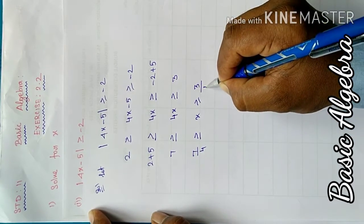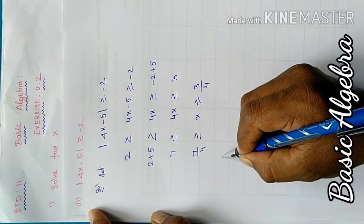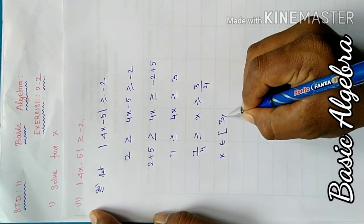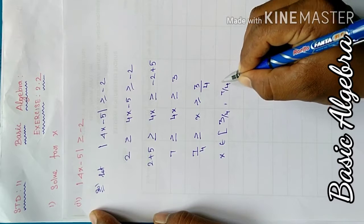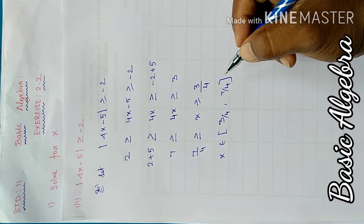Therefore, the solution is: x belongs to [3/4, 7/4]. Next we'll plot this on the number line.